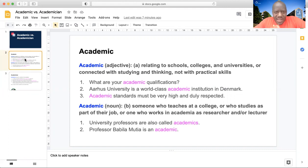So, academic as an adjective means relating to schools, colleges, and universities, or connected with studying and thinking, but not with practical skills sometimes. So, for example, what are your academic qualifications?